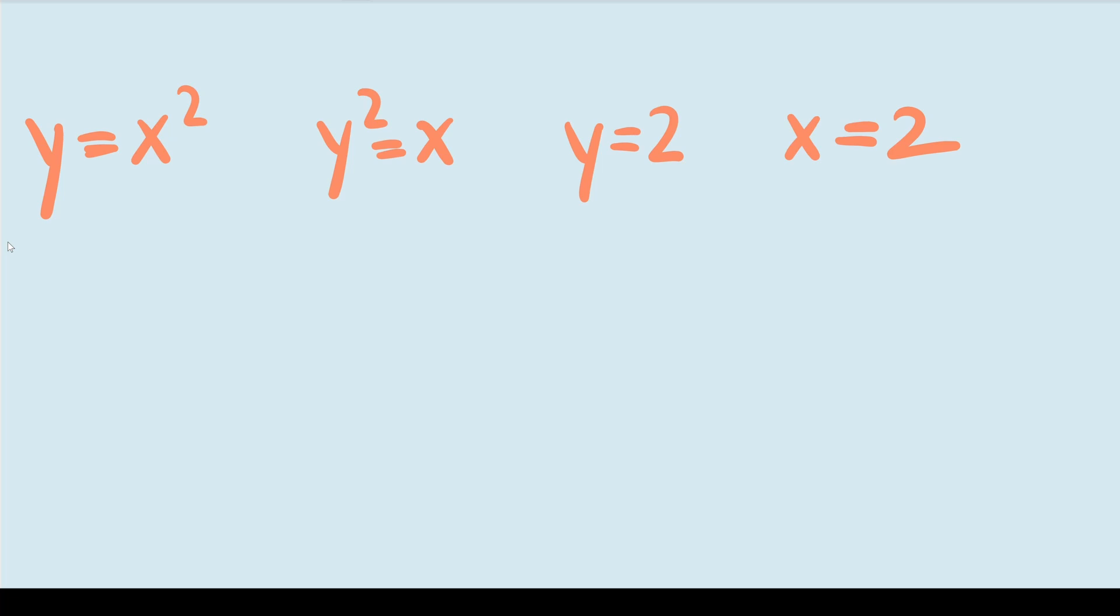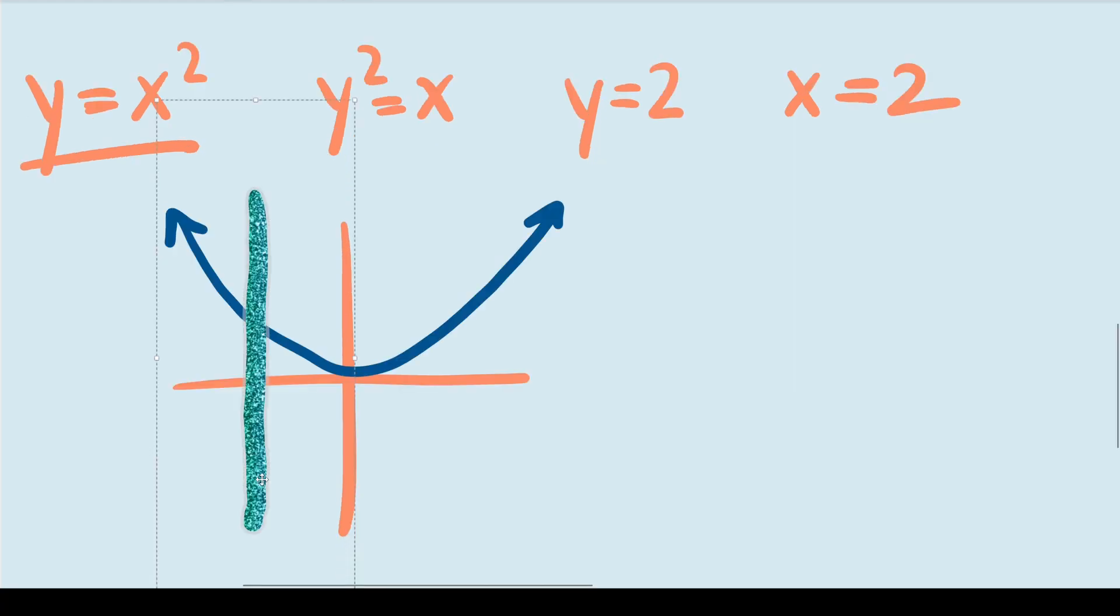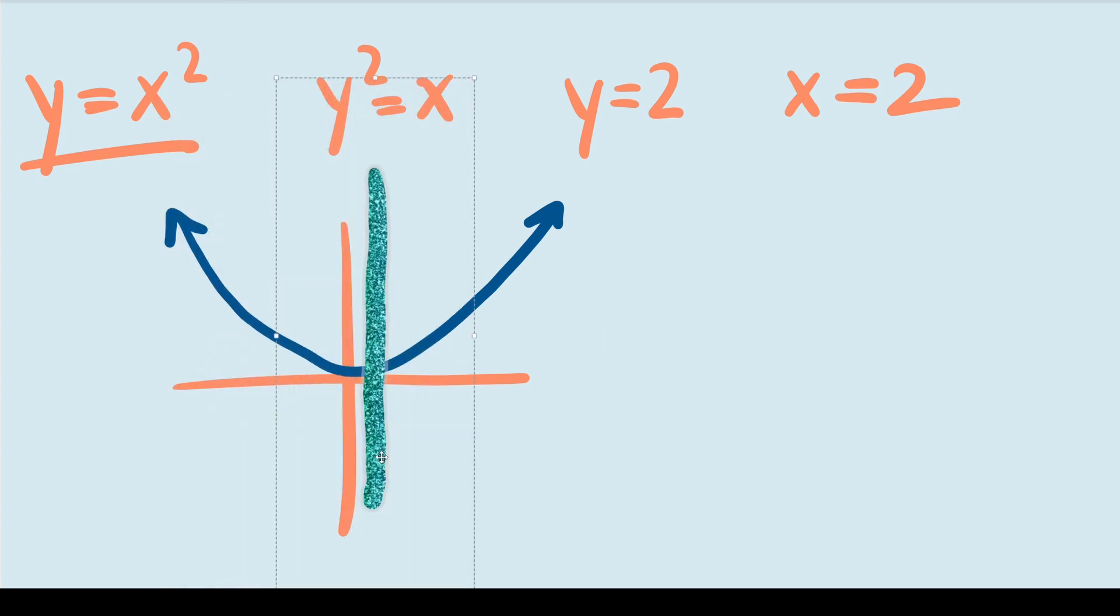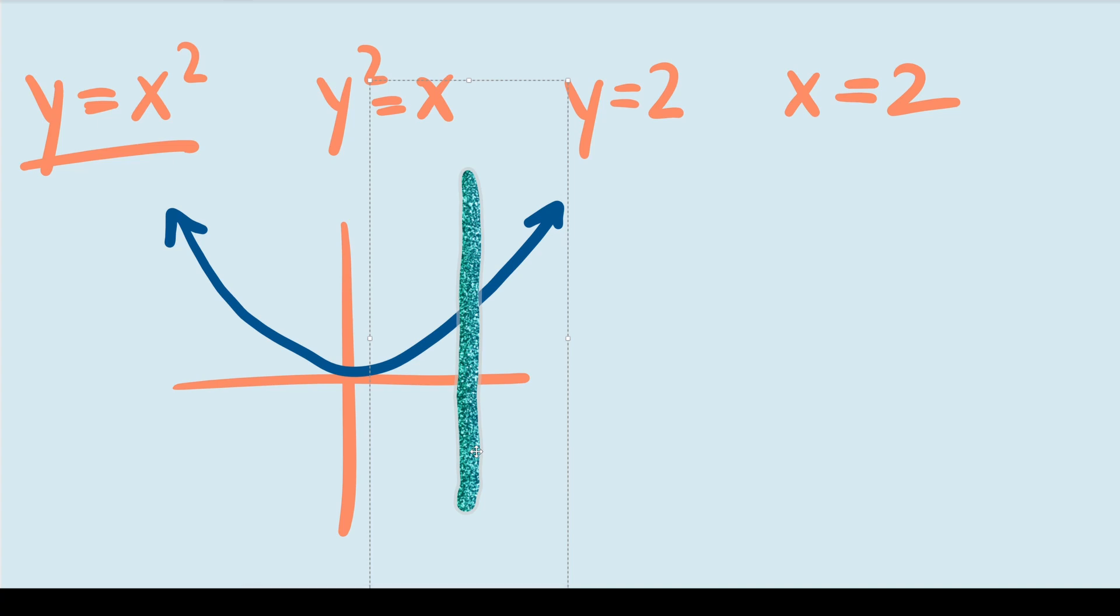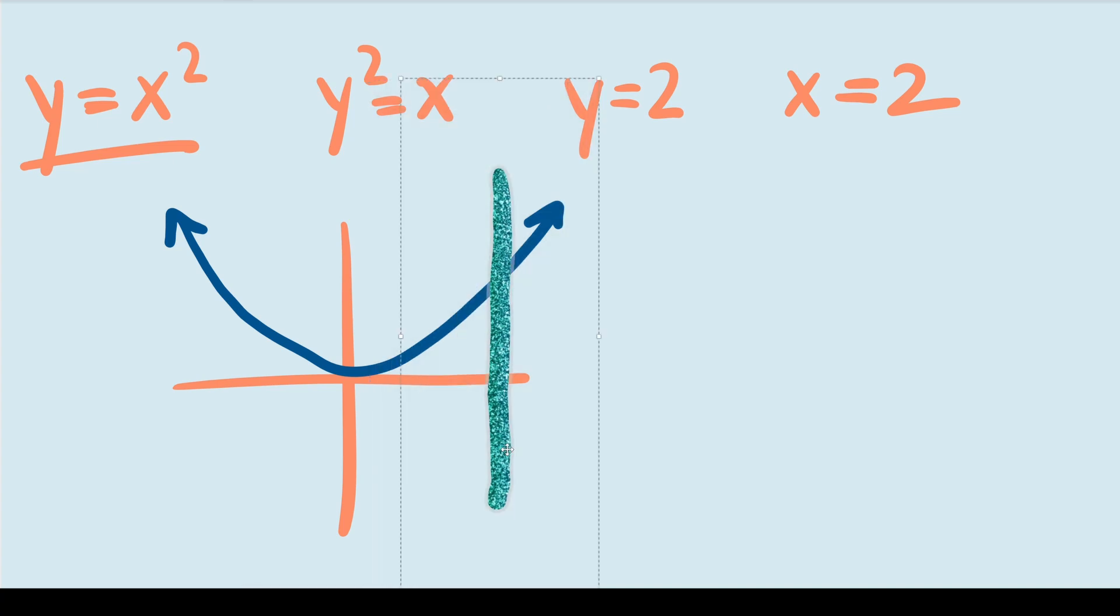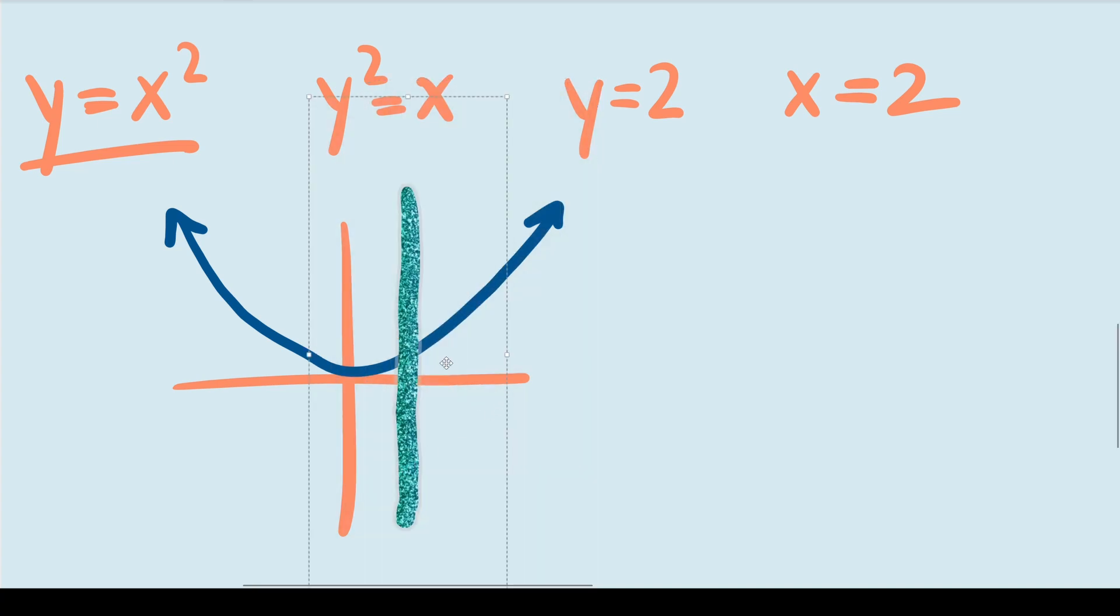So first up we have y equals x squared. If y equals x squared was truly a function then I would be able to take this vertical line shown here and move it at any point along the graph. And the graph would only intersect it one time. So this graph clearly meets that expectation because we can see that it only touches along these points where the graph exists.